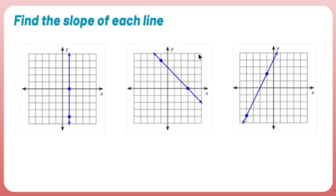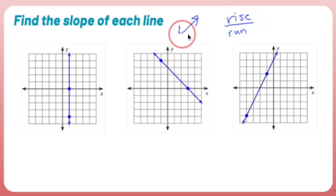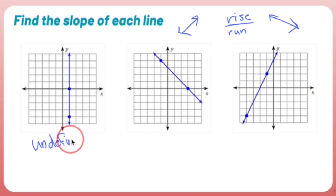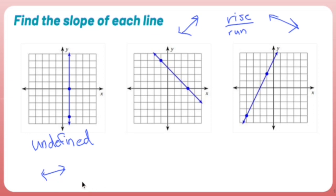Find the slope of each line. The slope is the rise over run. A positive slope goes up to the right, a negative slope goes down to the right. A vertical line — straight up and down — has an undefined slope, because you'd get a rise over a run of zero, and division by zero is undefined. A horizontal line, left to right, has a slope of zero.